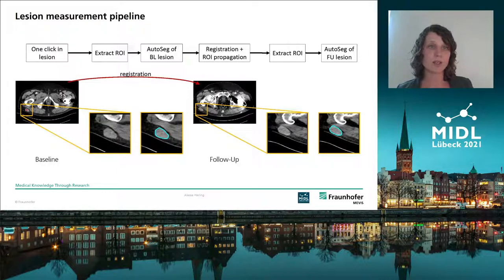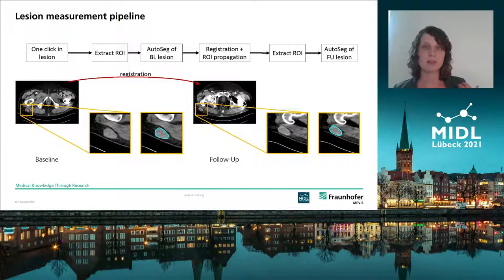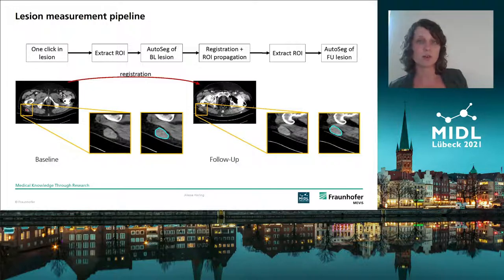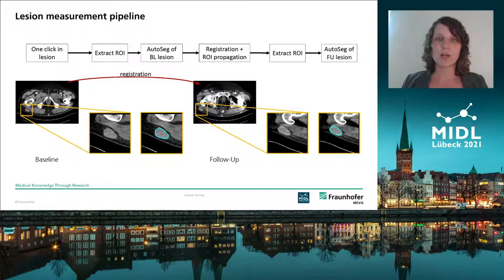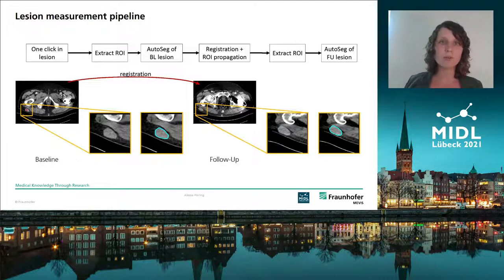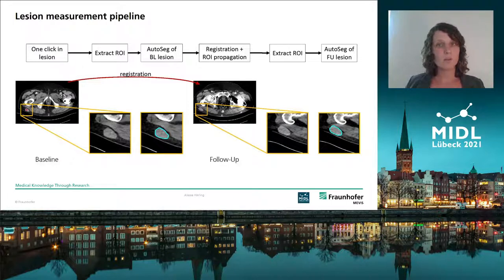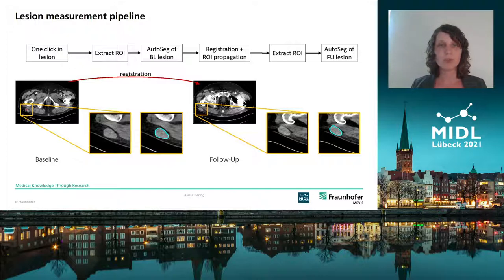After that, we extract a region of interest around this click annotation and automatically segment and measure the lesion. When the follow-up image is acquired, we use a registration algorithm to propagate this click annotation to the follow-up image and extract a region of interest. Again, we automatically segment and measure the lesion. However, there could be more than one lesion inside this region of interest, so we also have to find the correct one.